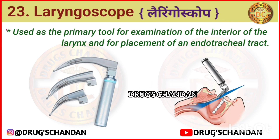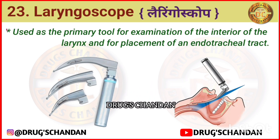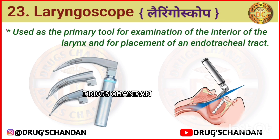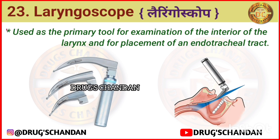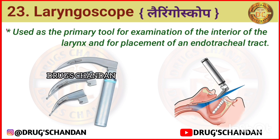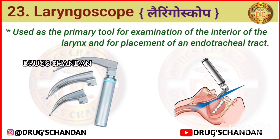Laryngoscope. A laryngoscope is used as the primary tool for examination of the interior of the larynx and for placement of an endotracheal tube.